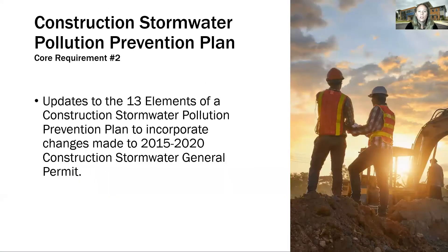Number four addresses core requirement, or minimum requirement, number two: construction stormwater pollution prevention plan. The 13 elements in minimum requirement number two have been updated to incorporate changes that were made to the 2015–2020 construction stormwater general permit.